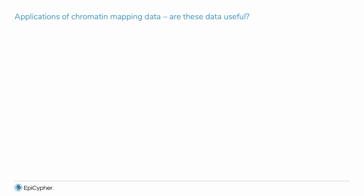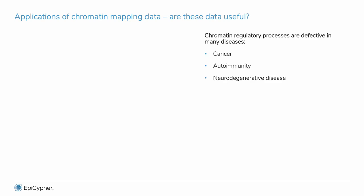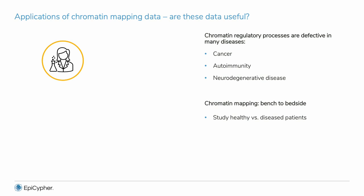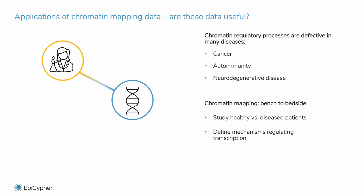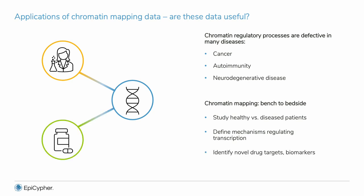Going big picture, how are these data used, and are there actual clinical applications? It is important to note that chromatin regulators are defective in many diseases and represent key drug targets. Chromatin mapping can impact every step of the drug development pipeline. In the academic setting, scientists use these tools to study diseased versus healthy patient samples and define key chromatin mechanisms. This information can be used to develop and validate drugs and biomarkers.